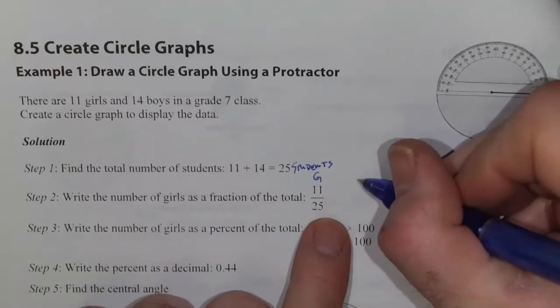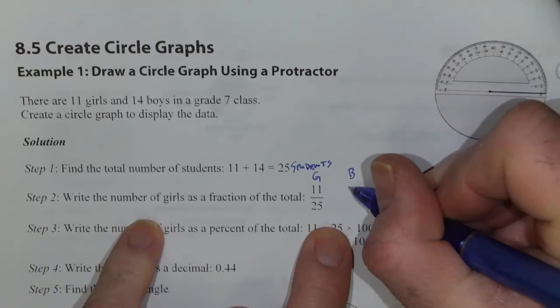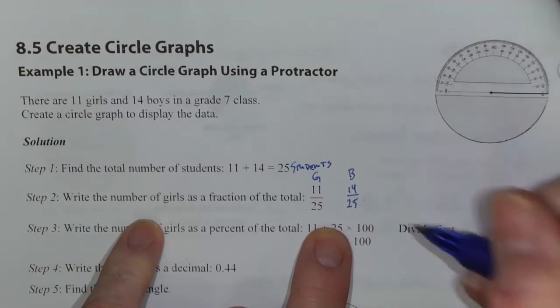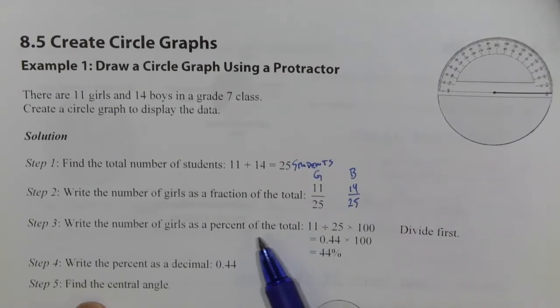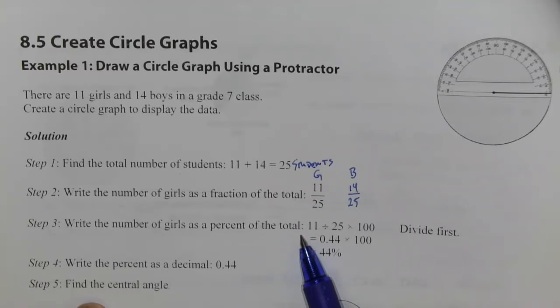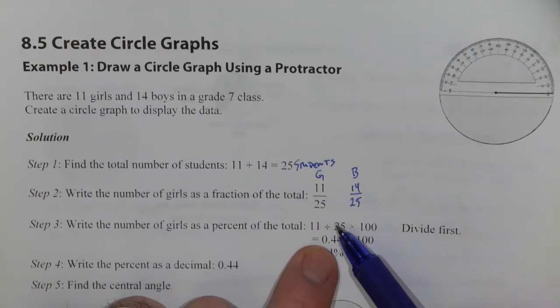The boys is 14 out of 25. Write the number of girls as a percent of the total. Okay, well to do that you can do 11 divided by 25.